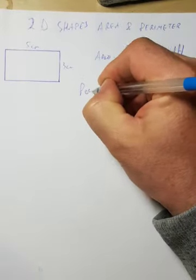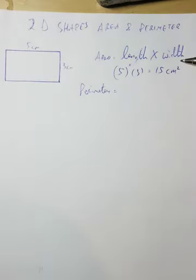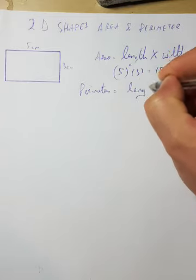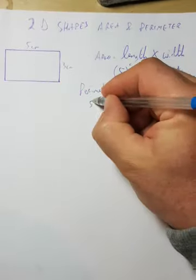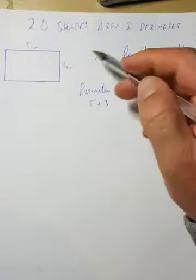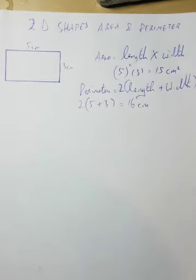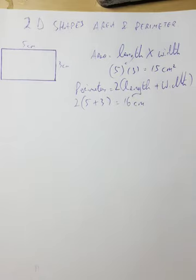Perimeter is length plus width times two, or basically add the four sides. So it's going to be five plus three which is eight, plus another five plus another three, so sixteen centimeters. That's basically it, nice and straightforward.